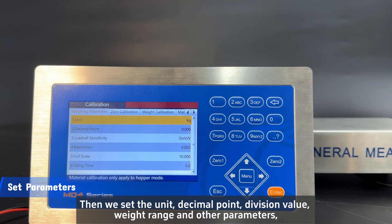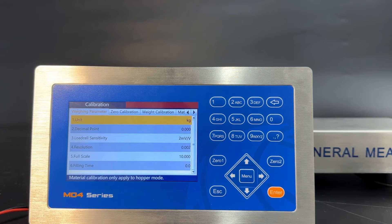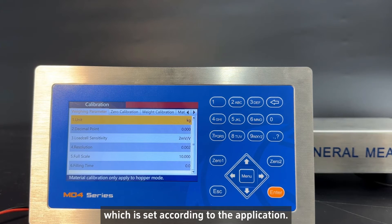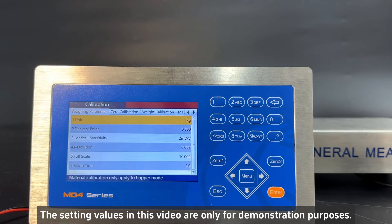Then we set the unit, decimal point, division value, weight range and other parameters, which is set according to the application. The setting values in this video are only for demonstration purposes.